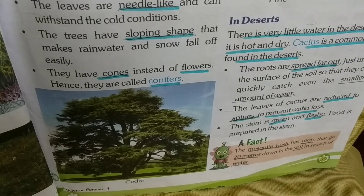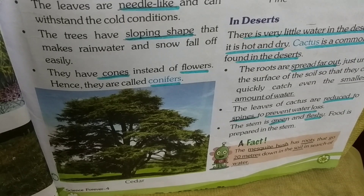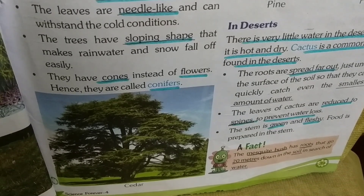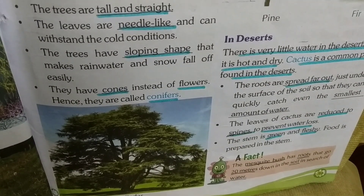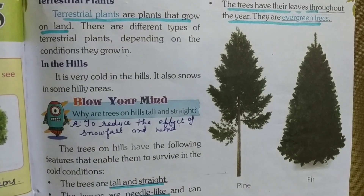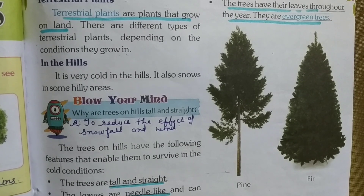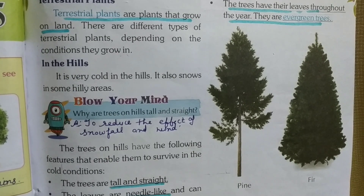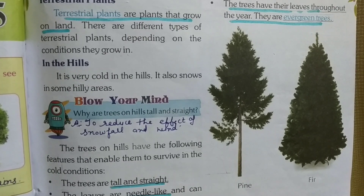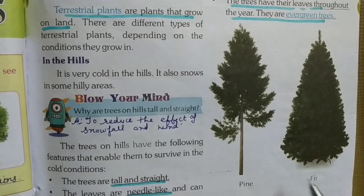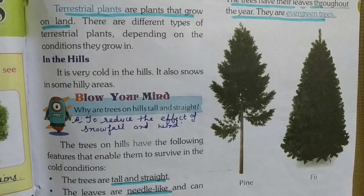They have cones instead of flowers — hence they are called conifers. The trees have their leaves throughout the year; they are called evergreen trees. Examples: pine, fir.